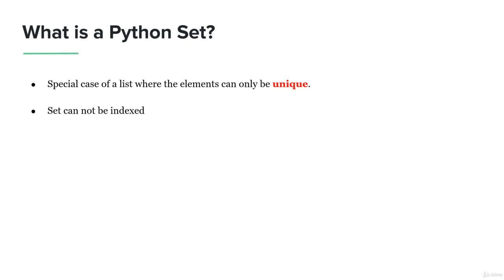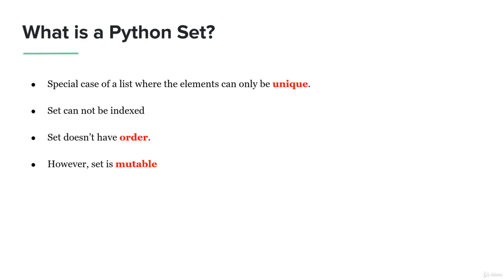The second difference is that a set cannot be indexed. So while in the list we can use indexing and slicing, here in the set we cannot do so — we cannot index the elements. Based on this, it's no surprise that sets don't really have order. However, sets are mutable, so you can add and remove elements from the set.